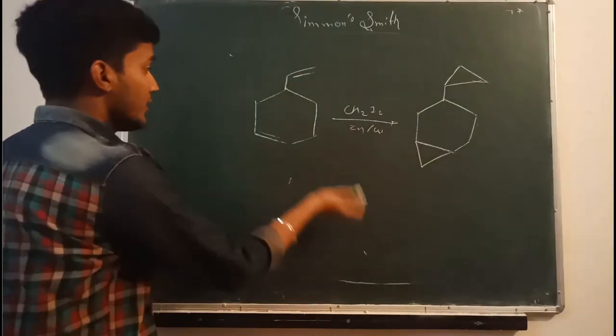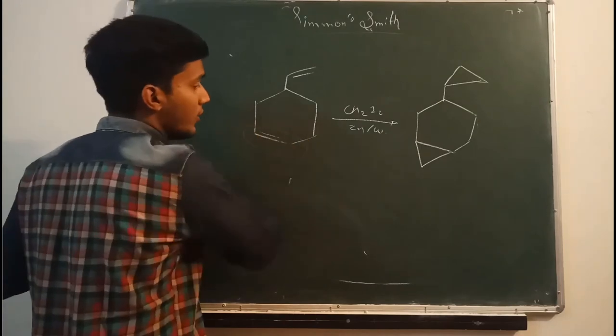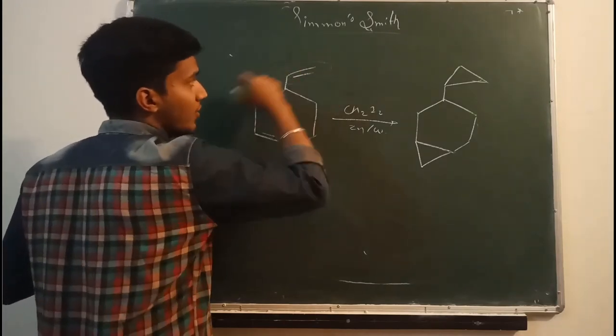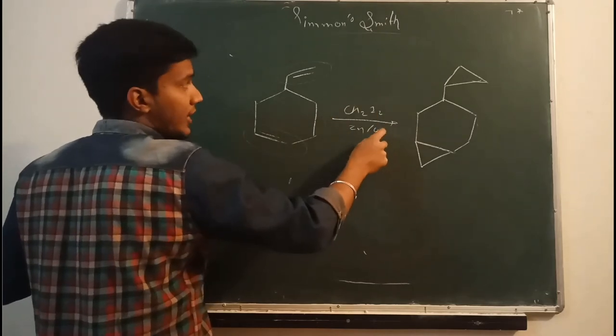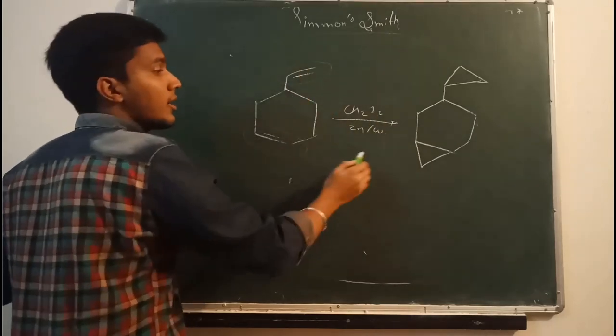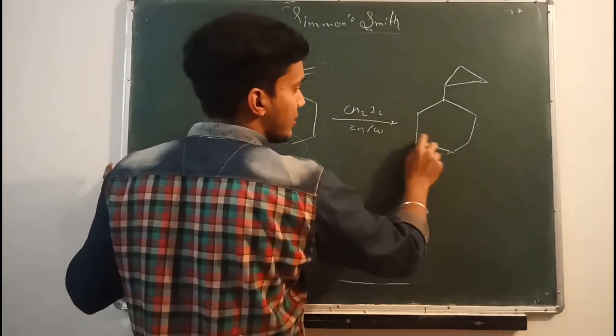There we see in this, there we have more crowding area and here we have the less crowding area. So this Simmons-Smith reaction will attack on the less crowding area. So the product will be like this.